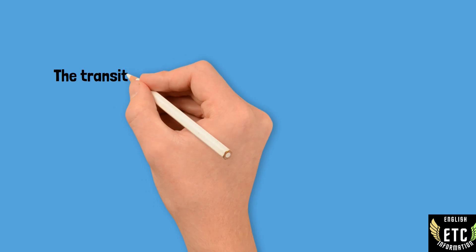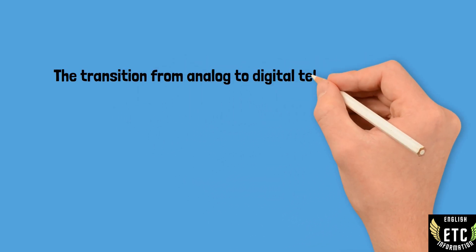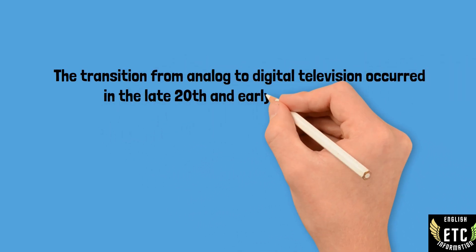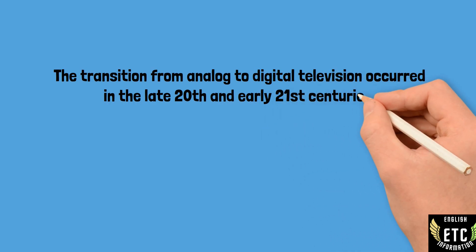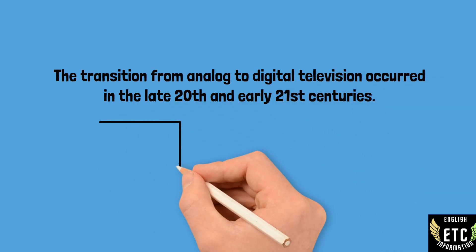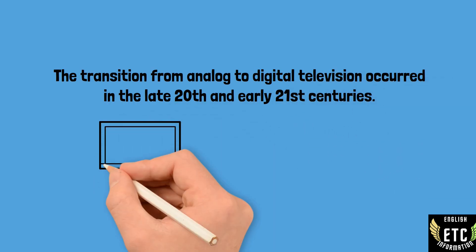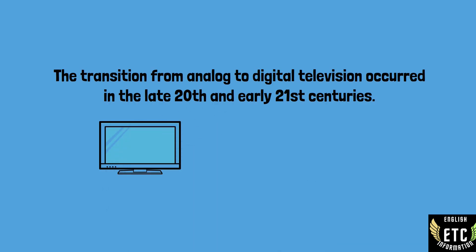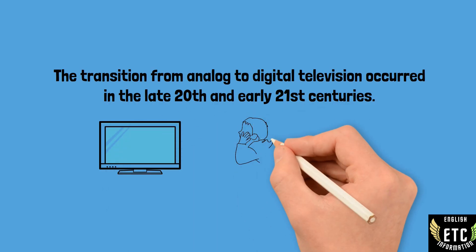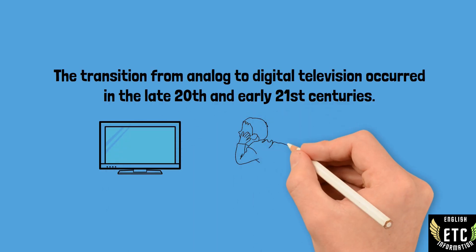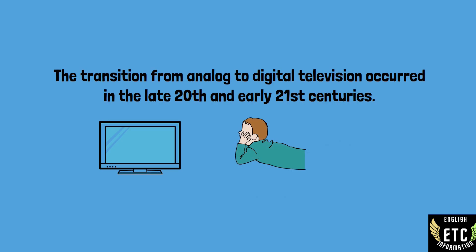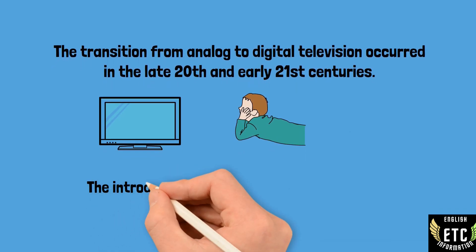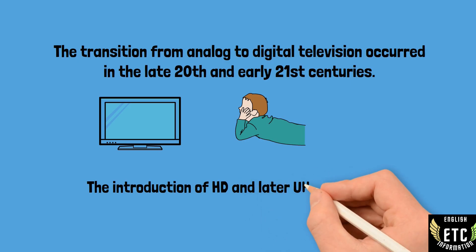The transition from analog to digital television occurred in the late 20th and early 21st centuries. Digital technology improved image and sound quality and allowed for additional channels.